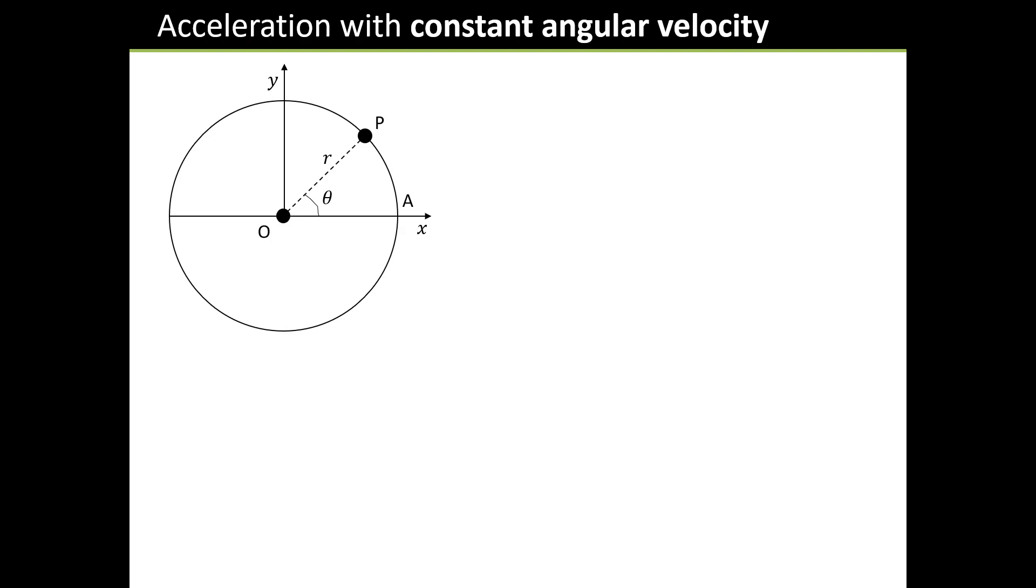Now, acceleration with constant angular velocity. What does this mean for the acceleration of the particle? Before we go any further, I want to draw in a right angle triangle here with an angle θ at the bottom and a hypotenuse of length r. We can work out the lengths of the two sides of that orange triangle using trigonometry. That's r cos θ and that is r sin θ.